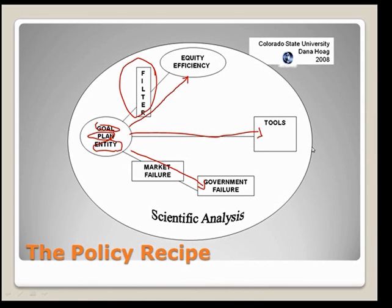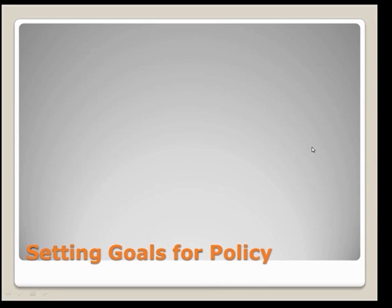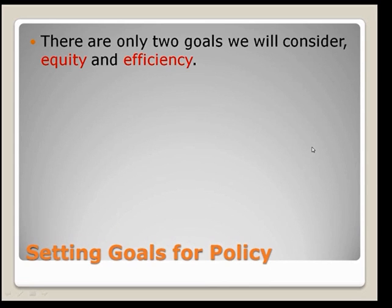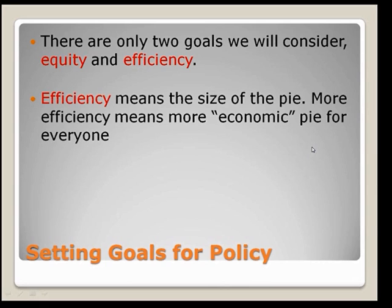I'm not going to talk about the second parts of the policy recipe at this point — we're going to start on the first half of the policy recipe for the first part of the semester. The first thing we're going to talk about is how to set goals. Again, there are really two goals to consider: equity and efficiency. Efficiency simply means — think of it as the size of the economic pie. More efficiency means more pie for everyone. In your life you have a happiness pie — everything that makes you happy: money, relationships, your house, your neighborhood.